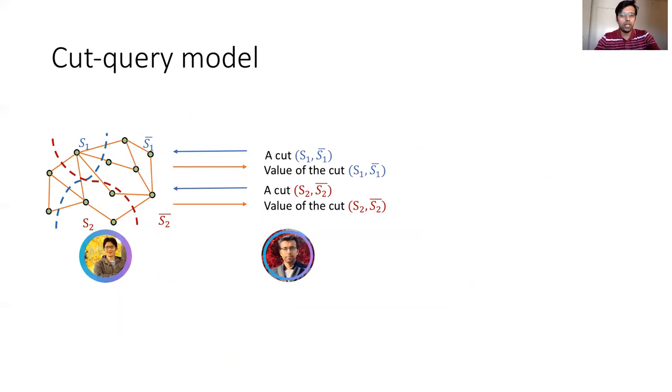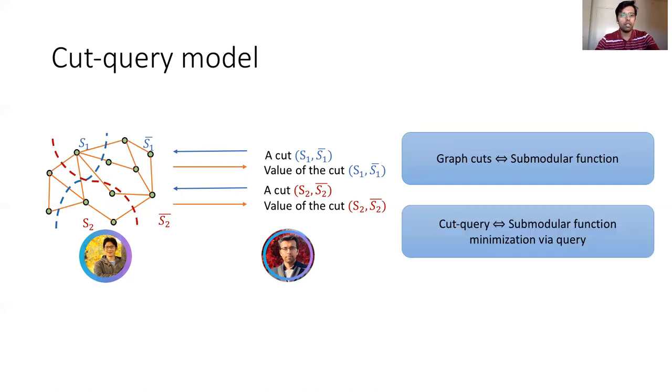The model of cut query is inspired from the area of submodular functions. The graph cut is a submodular function, and hence the minimum cut problem is an example of submodular function minimization. Those who are familiar with submodular function minimization will recognize that the cut query model is nothing but submodular function minimization by querying the submodular function.